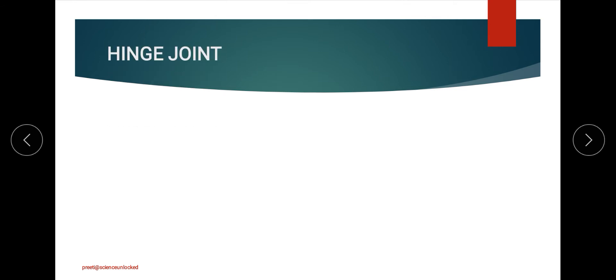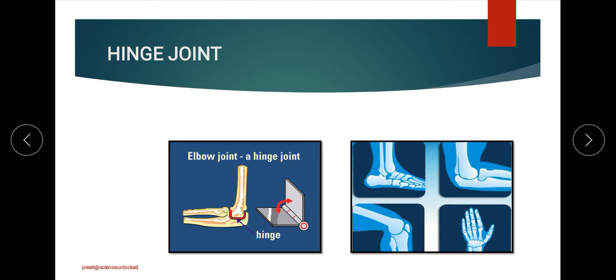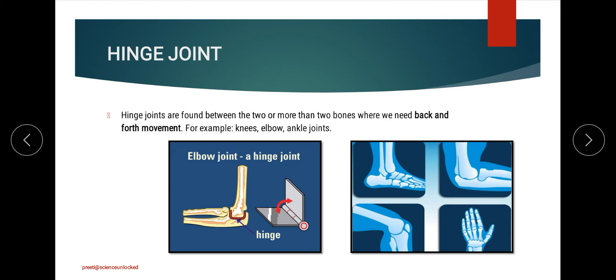The third category is the hinge joint, which works like a hinge on doors and windows. Two bones are joined together and allow a back-and-forth movement, similar to the movement of a hinge. This kind of joint is observed in the knee and elbow.